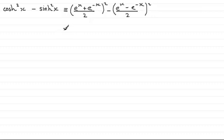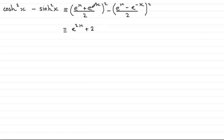If I expand the top line here — e to the power x plus e to the minus x all squared — I'm going to get e to the x times e to the x which is e to the power 2x. Then I get twice the product: e to the x times e to the minus x is plus 1, double that and you get plus 2. Then I square the last term: e to the minus x all squared is plus e to the power minus 2x. And this will be over 2 squared which is 4.